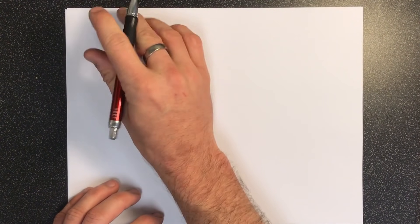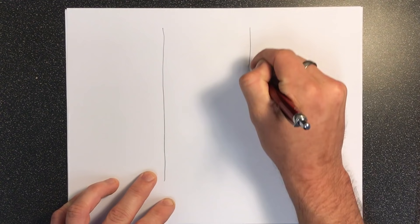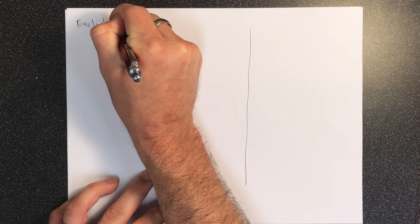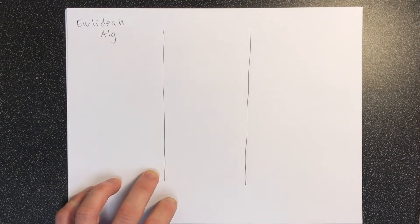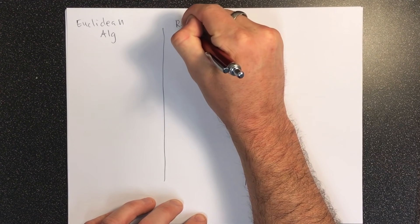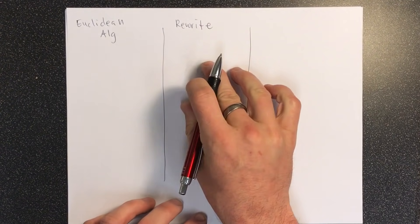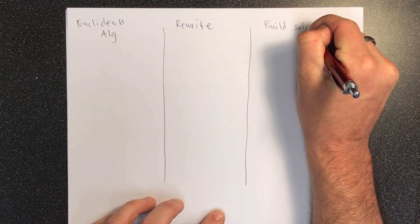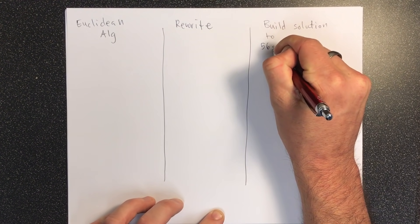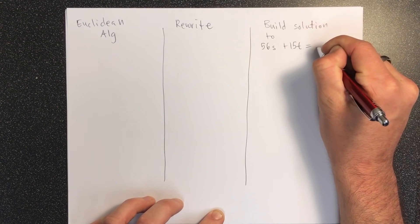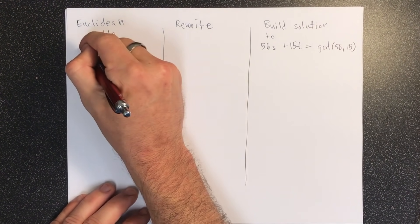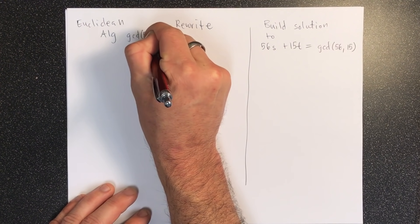So let's get a new sheet of paper here. We start by—it's going to be helpful to build three columns. So in the first column we're going to run the normal Euclidean algorithm, which I will show you how to do in just a second. In the second column we're going to rewrite every line from the first column slightly, and in the third column we're going to build the solution to 56s plus 15t is equal to whatever the GCD is. Okay, so let's see how to do that. So we start, we want—here we're just calculating the GCD of 56 and 15.